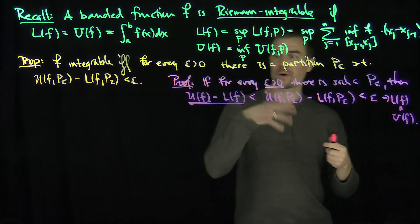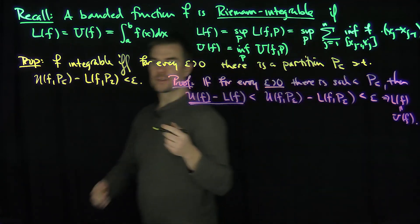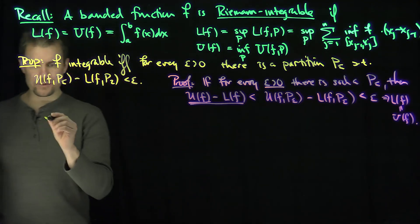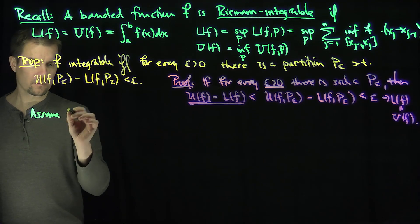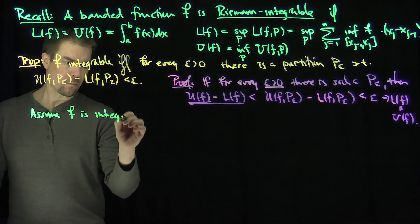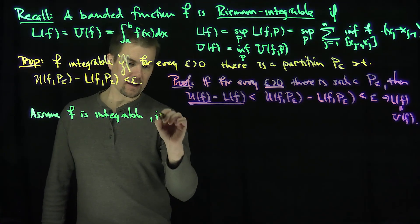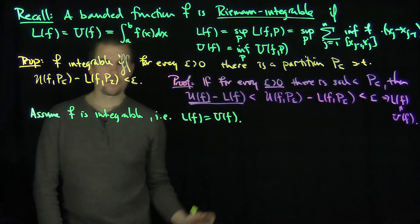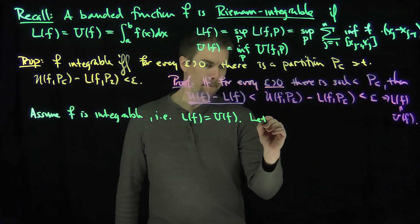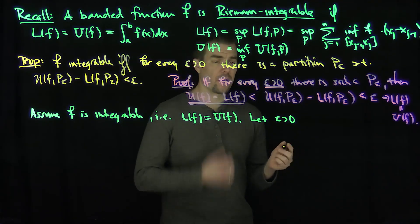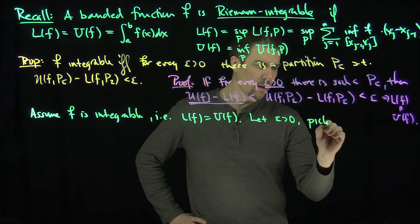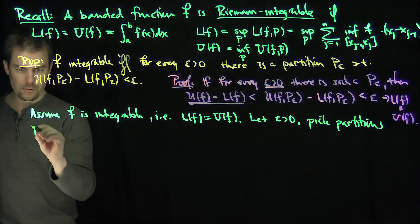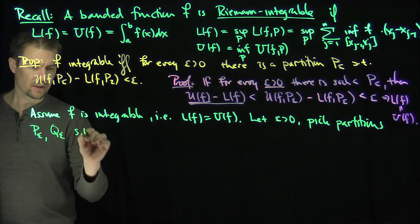Now how do we prove the second direction? Assume that F is integrable, i.e., Lf equals Uf. Let epsilon be greater than zero. Then pick partitions P_epsilon and Q_epsilon such that two things are true.